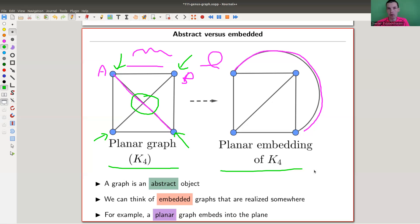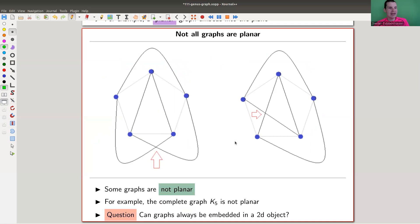Point is, you cannot draw all graphs in the plane. Some you can, some you can't. Here's an example of a graph that you cannot draw in the plane - it is actually K5. Let me draw K5 again. The five just says it has five vertices, and the K for complete means that everything is connected to everything. If you draw it naively, it will look like a star with a cycle on the outside. But as I said, that's just the abstract graph. There might be a different way of drawing it.